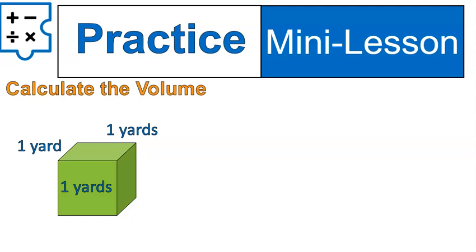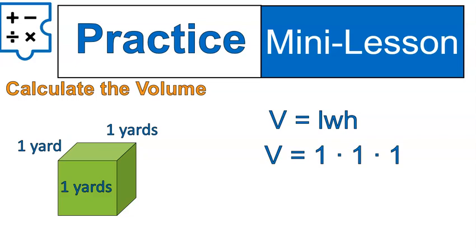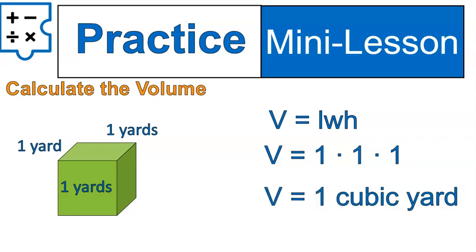Let's do another practice. Calculate the volume of this special rectangular prism. This one was 1 times 1 times 1 — 1 yard by 1 yard by 1 yard — giving us 1 cubic yard. The reason I did this is because 1 cubic yard is a very common measurement. If you're ordering mulch, cement, or concrete, those are measured in cubic yards. Cubic yards are used a lot in landscaping and construction. So 1 times 1 times 1 is 1 cubic yard.